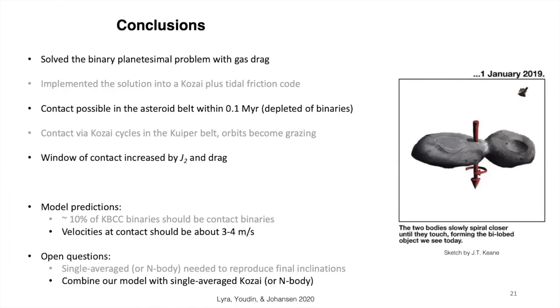Predictions of the model is that about 10% of Kuiper belt cold classical binaries should be contact binaries, and the velocity at contact should be about 3 to 4 meters per second, which is the escape velocity scaled by the asymmetry of the bodies. An open question is to use single-average or N-body or full N-body models to reproduce the final inclinations.